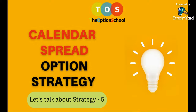Good evening everybody and welcome to another live stream by the Option School. This is your friend Pradeep Singla. In our series 'Let's Talk About Strategy', this is strategy number five. We have already done four strategies: short strangle, short straddle, iron condor, and ratio spread. Now the fifth strategy, one of my favorite strategies.